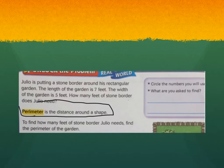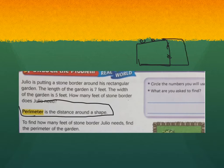So to find out how many feet of stone border Julio needs, find the perimeter of the garden. When I'm looking at these questions, I'm always trying to get a picture in my head. So I'm thinking of him putting little stones around the border of the garden. We know that the length is seven and that the width is five. And I just said earlier, the length is always going to be the longer side. So in this one, this would be the length and this would be the width.